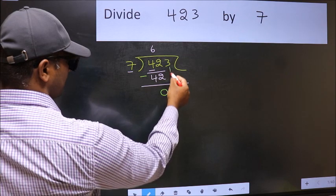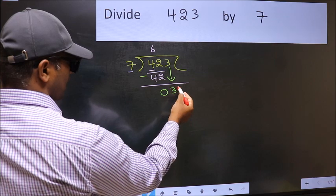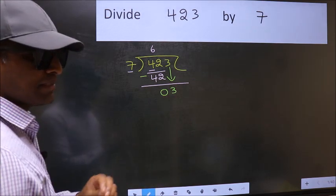After this, bring down the beside number. So, 3 down. After this step, the mistake happens.